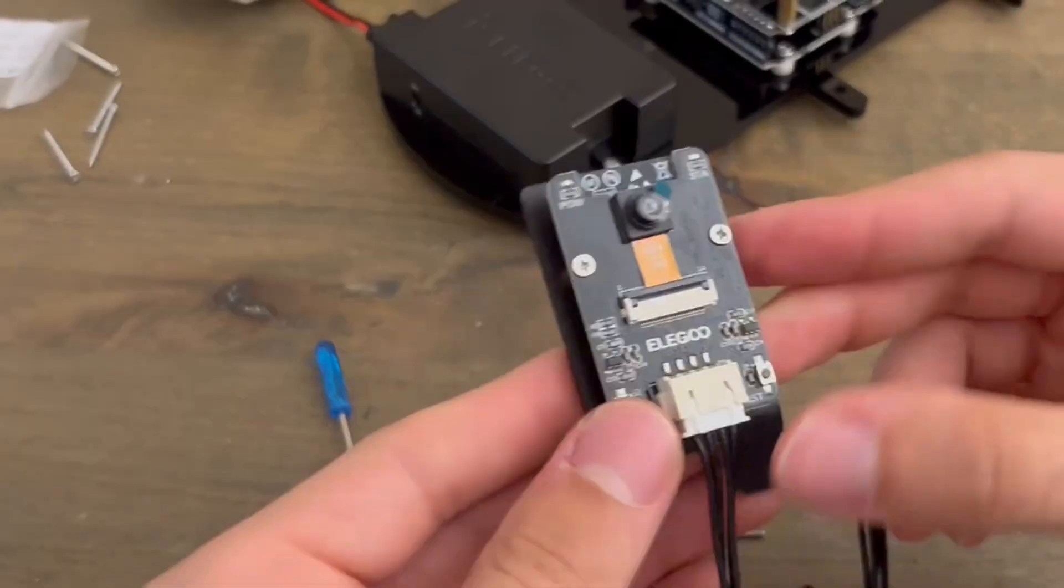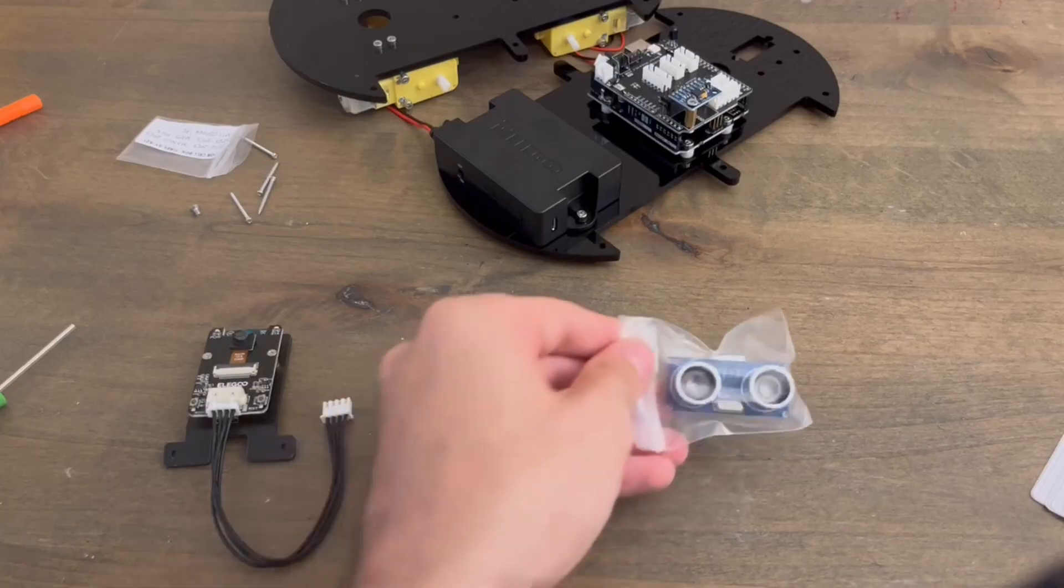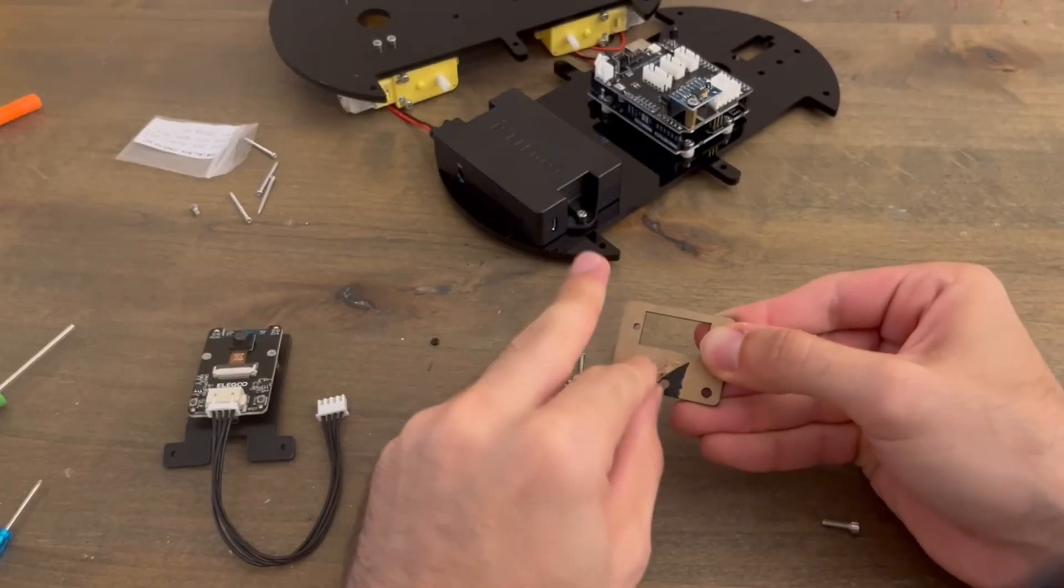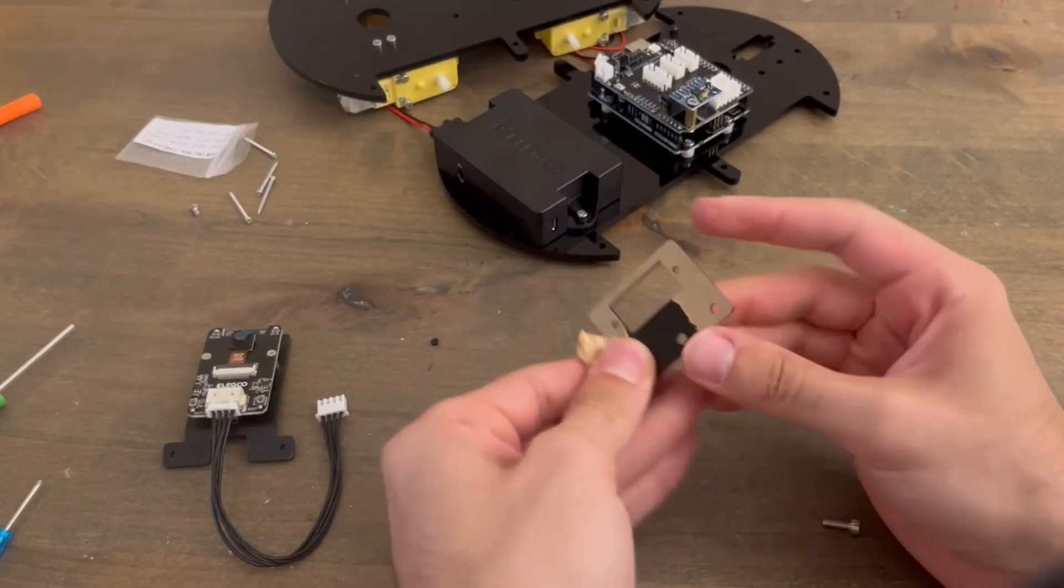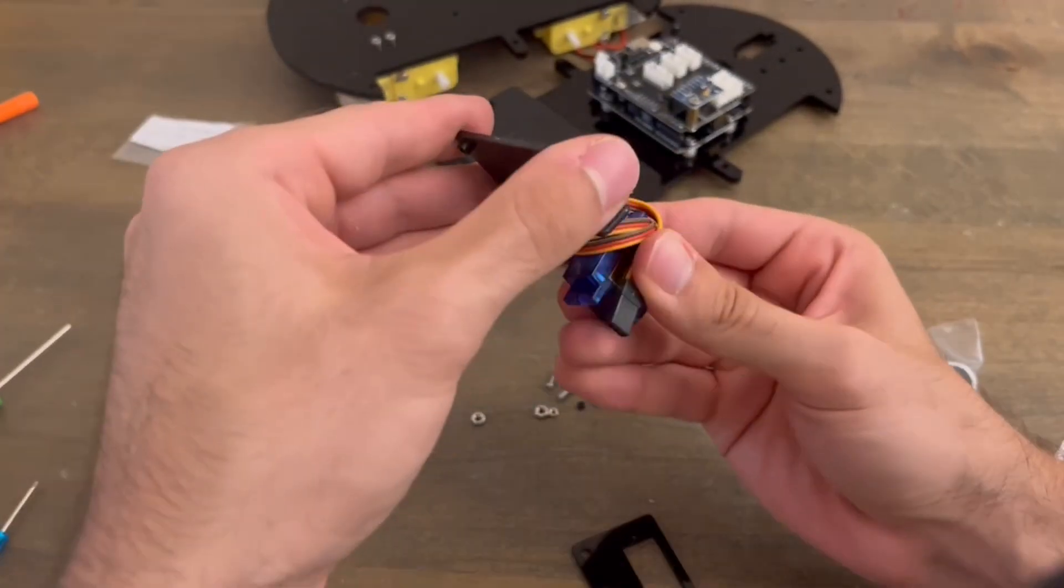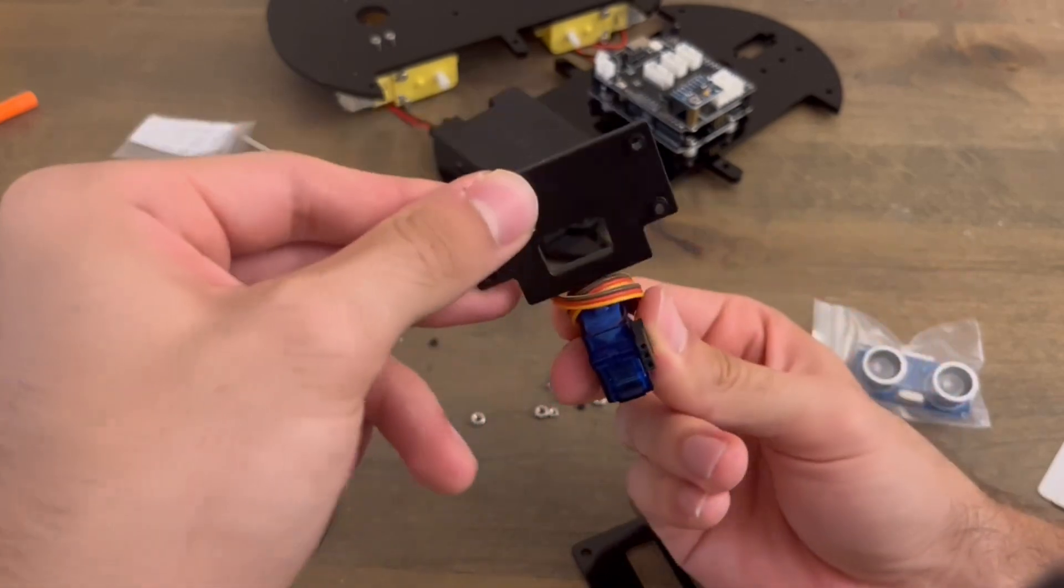Another commonly used sensor in robotics projects is the ultrasonic sensor. As its name suggests, it emits high-pitched sounds that are undetectable by the human ear to measure the distance from nearby objects. It'll mount onto this head plate that will rotate by using a servo motor.